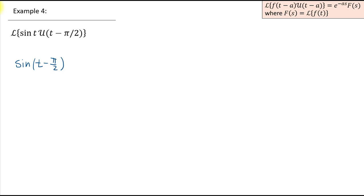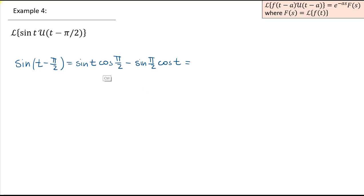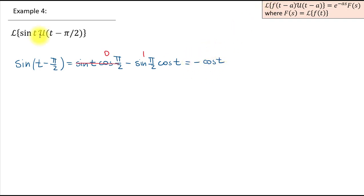A common technique is to write down what we need and verify the overall function is unchanged. Let's try writing sin(t) as sin(t − π/2). Applying the sine-difference formula: sin(t−π/2) = sin(t)·cos(π/2) − cos(t)·sin(π/2). Since cos(π/2) = 0, the first term vanishes, and sin(π/2) = 1, so we get −cos(t). This is completely different from the original sin(t), so there's no easy way to adjust this result.